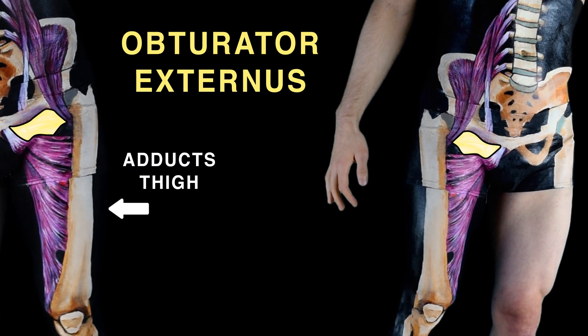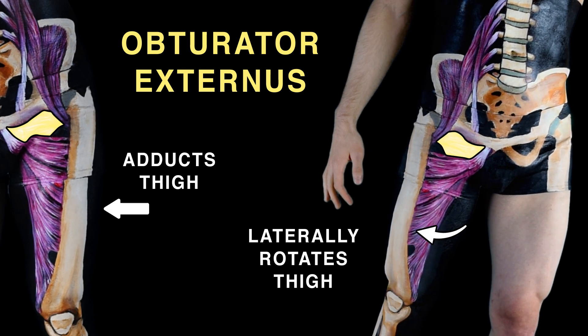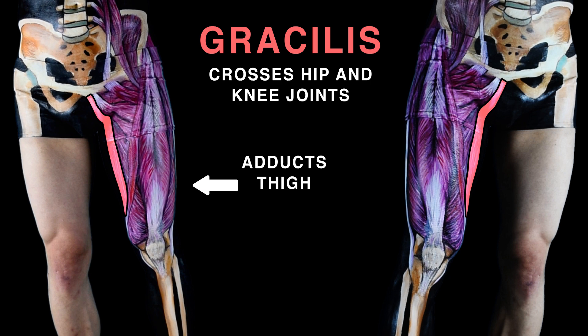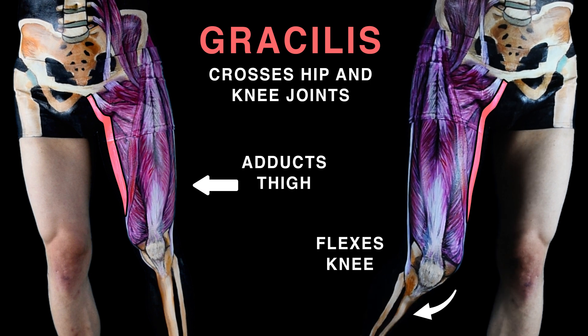Obturator externus adducts and laterally rotates the thigh. Gracilis crosses the hip and knee joints, adducts the thigh, and flexes the knee.